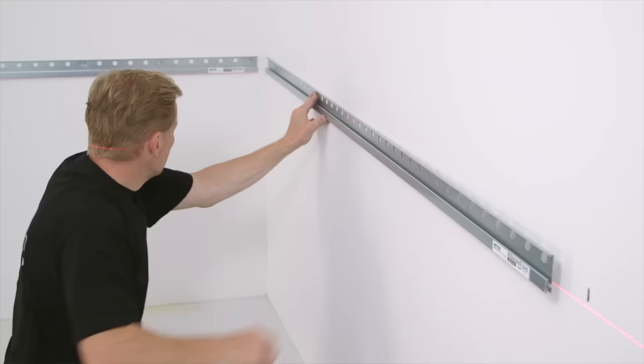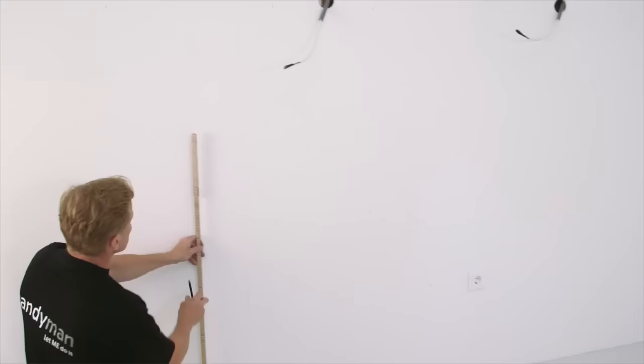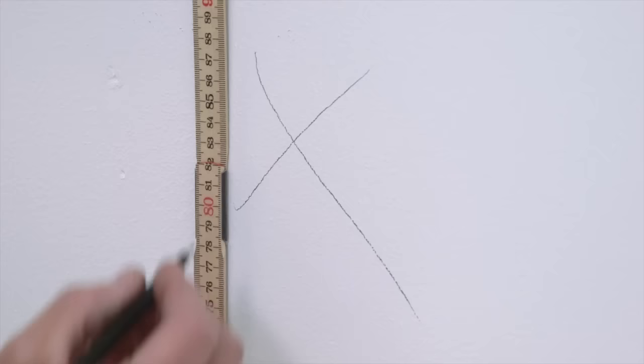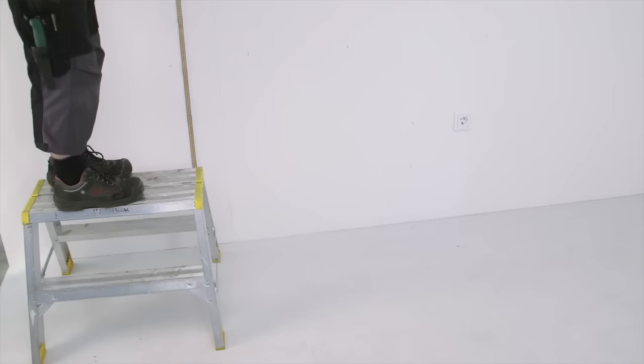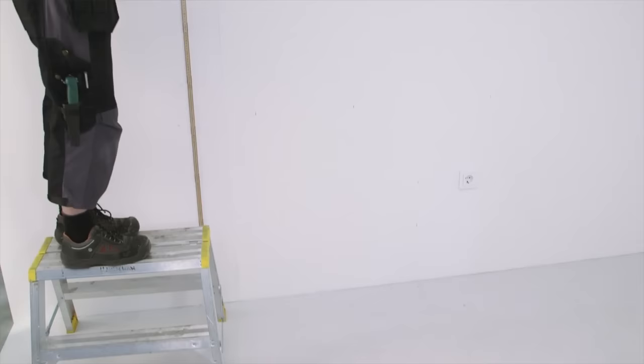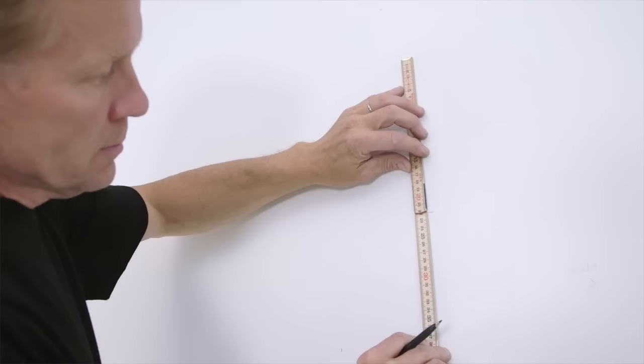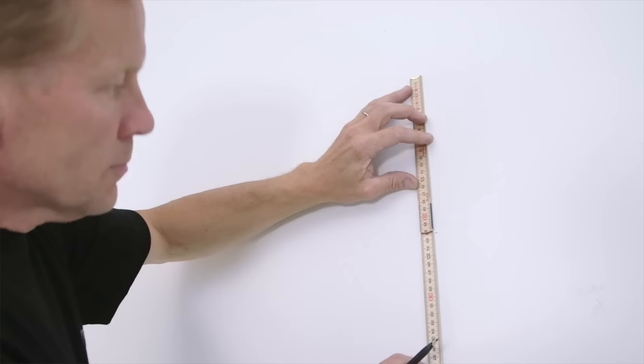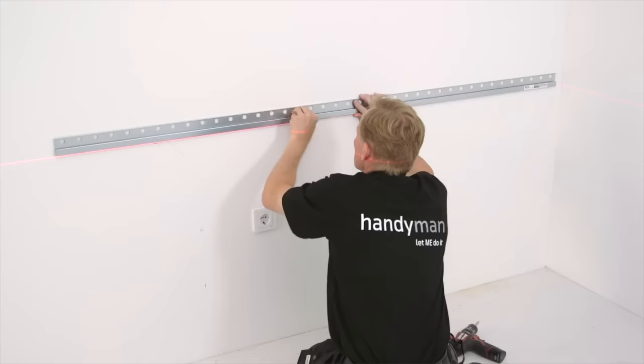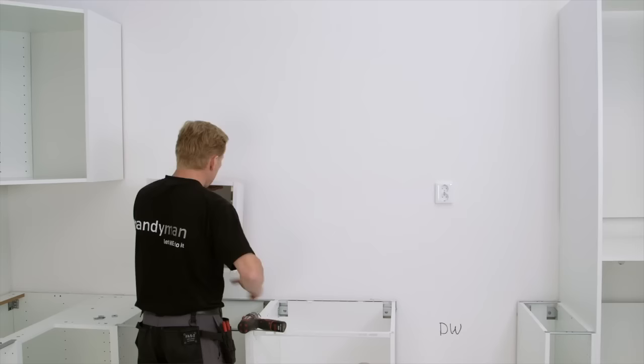Time to fasten the rails onto the walls. Use the highest point of the floor to mark out the correct height for the lower rail, 82 centimetres. Measure the height for the upper rail, in this case 222 centimetres, because we will use a 220 high cabinet in this kitchen. These measurements are to the bottom of the rails.